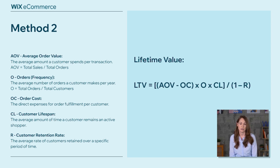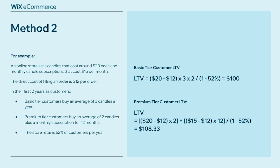In method two, we add in two more metrics: order cost (direct expenses for orders fulfilled) and customer retention rate (the average rate of customers retained over that specific period of time). For our basic tier, lifetime value equals ($20 minus the $12 cost = $8) × 3 candles × 2 years, divided by one minus the retention rate (i.e., the churn). With a 52% retention rate, that gives us a $100 customer lifetime value.